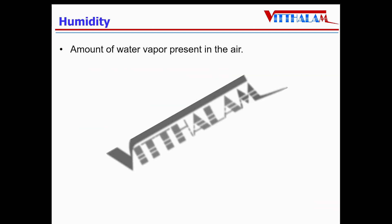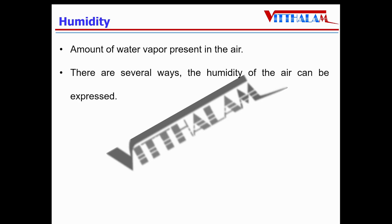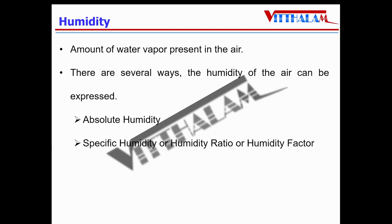Humidity is the amount of water vapor present in the air. Water vapor is generally invisible to the human eye. If there is a lot of water vapor in the air, the humidity will be high. The higher the humidity, the wetter it feels outside. There are several ways humidity can be expressed: first, absolute humidity; second, specific humidity, also known as humidity ratio or humidity factor; and third, relative humidity.